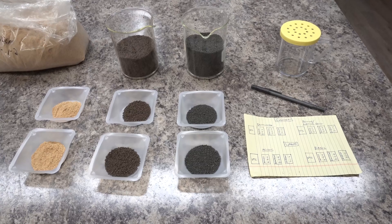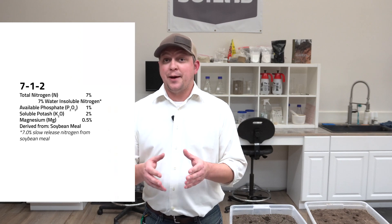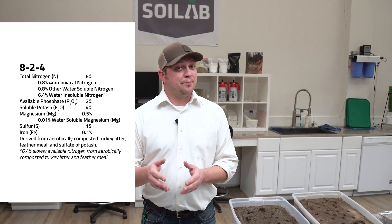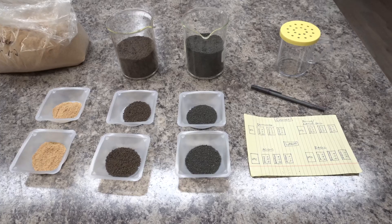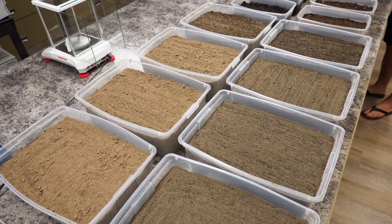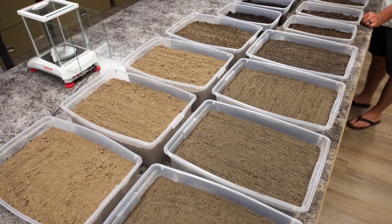We also wanted to compare different organic products, so we used three different types. We used one that's the byproduct of wastewater treatment, one plant-based organic fertilizer product, and another blended product that blended feather meal, compost, and potash. So three unique organic products, two unique soils, and we tracked the nutrient release curve in each. We'll be presenting those results here in just a moment, as soon as we talk about how we designed the study.